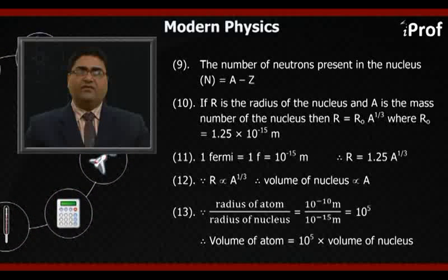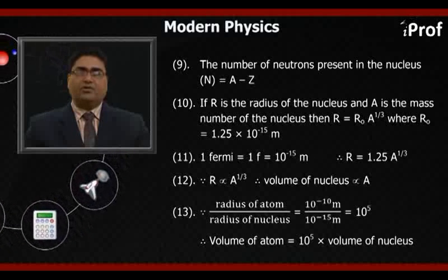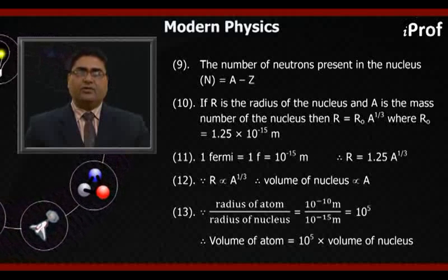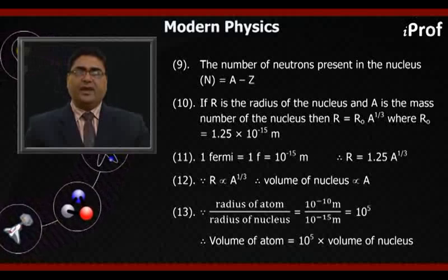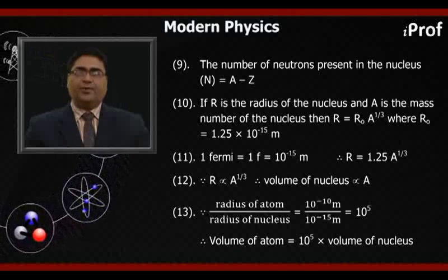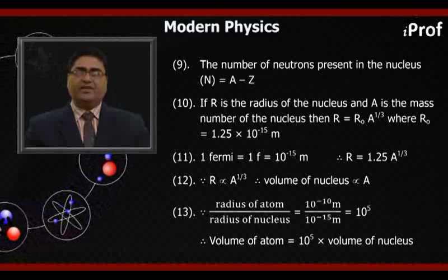Eleventh, 1 fermi equals 10^(-15) meter. Therefore, R equals 1.25 A^(1/3) fermi.